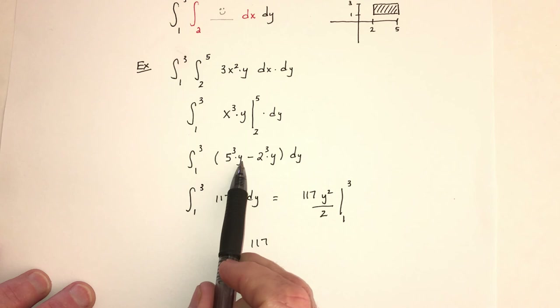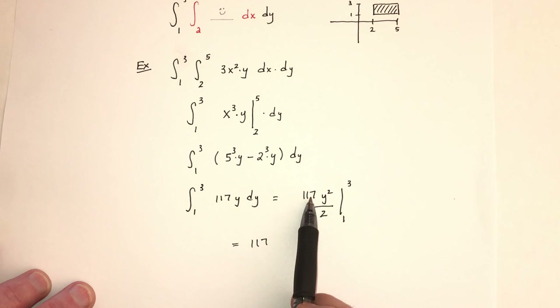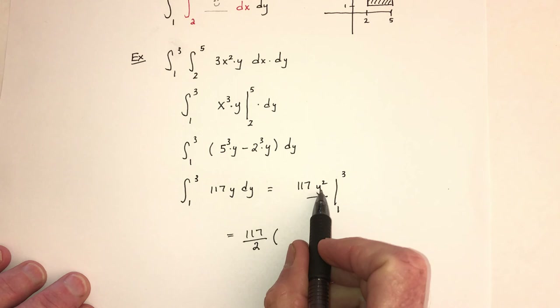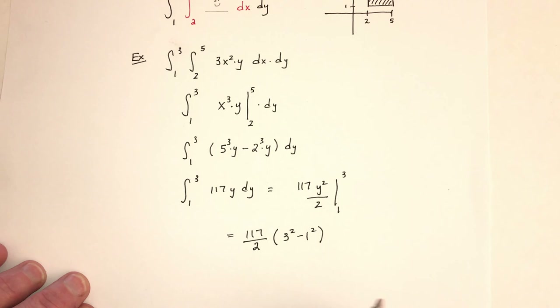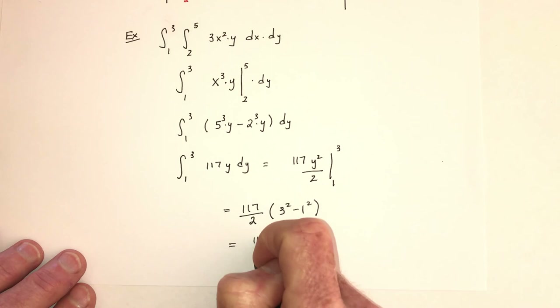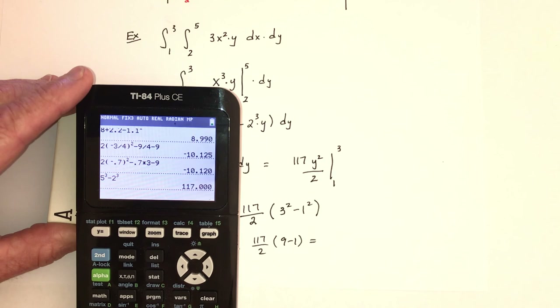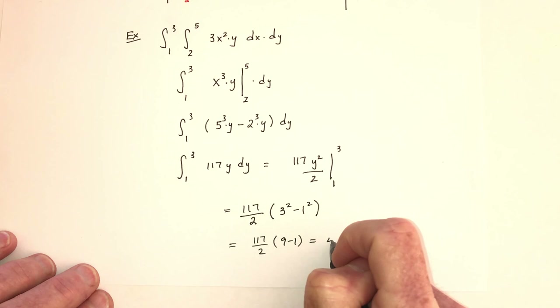So that will be 117, and I could factor it out. So with 117, actually 117 over two, I could factor it out. Since I factored it out, all that's left is y squared - so that would be three squared minus one squared. That's 117 over two, and nine minus one is eight. So if this is an eight and you cut it in half, that's four. So what's 117 times four? 468.